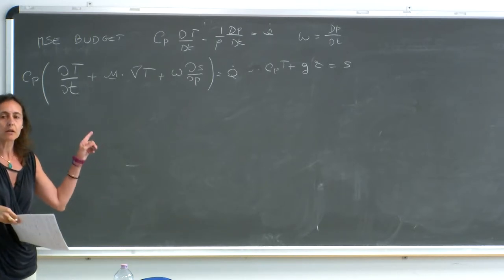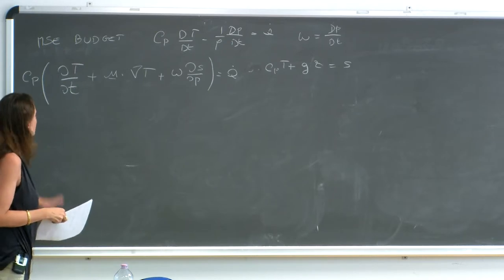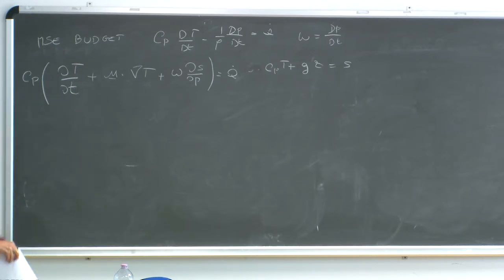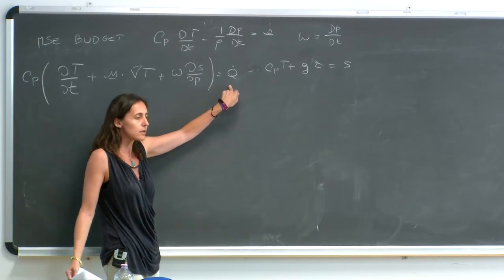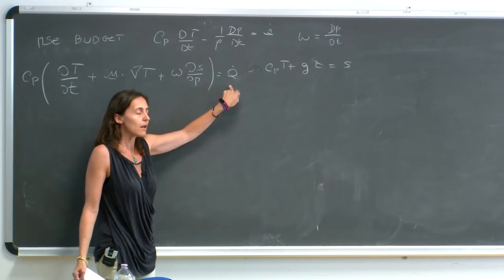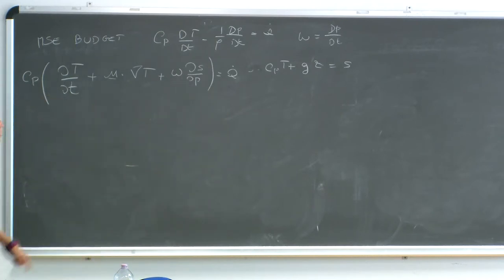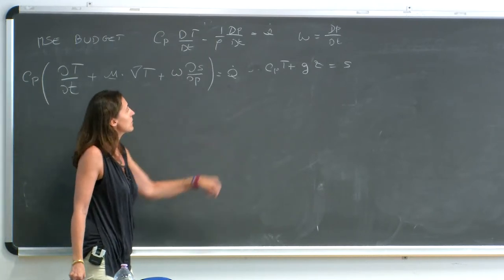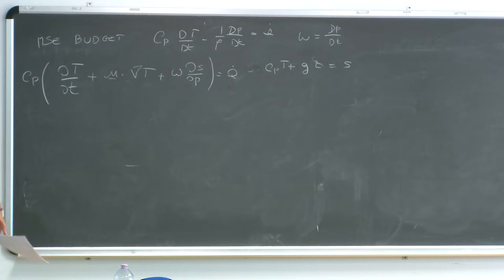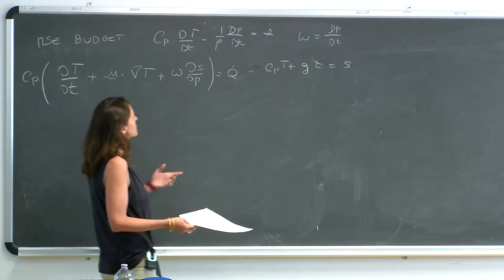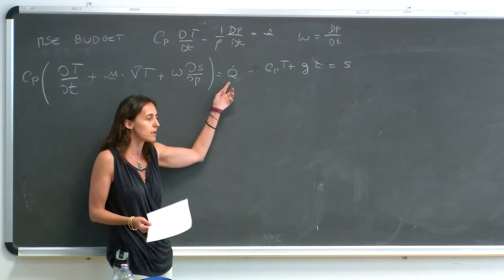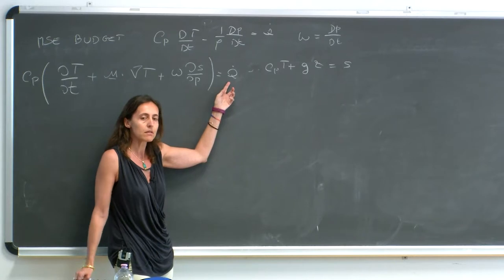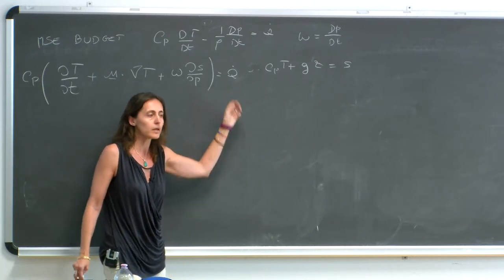There has been a lot of work using the dry thermodynamic path — once you know the distribution of the heating rate and precipitation pattern, you can look at what large-scale flow is consistent with and generated by the diabatic heating. But the problem is that it's diagnostic, not prognostic. Once you introduce a perturbation, because the distribution of precipitation is strongly influenced by the large-scale patterns, this budget cannot tell you what happens.